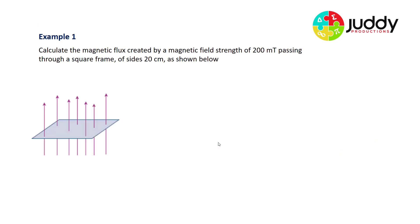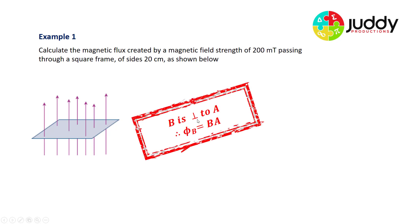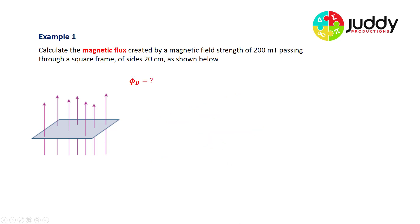Example one: calculate the magnetic flux created by a magnetic field strength of 200 milli-tesla passing through a square frame of sides 20 centimeters, as shown. The magnetic field lines come through perpendicular to the surface area of the coil. Since the magnetic field is perpendicular to the area, we can calculate magnetic flux by simply multiplying the field strength in tesla by the area in meters squared.